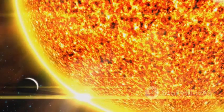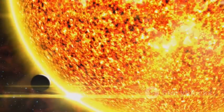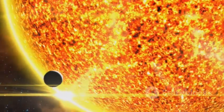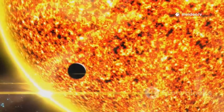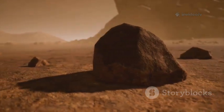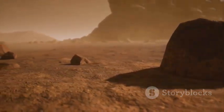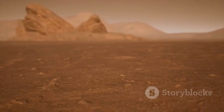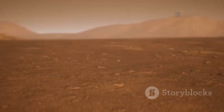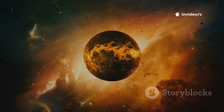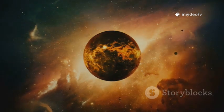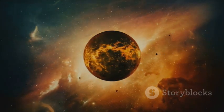Proxima b's close orbit, once its greatest hope, is also its downfall. The proximity exposes it to the worst the star has to offer, making survival nearly impossible. The truth: Proxima b is likely a barren, airless, radiation-blasted world. Its surface is a testament to the harsh realities of space, not the second Earth we hoped for. The search for a true twin to our planet continues, and with it, our hope for finding life elsewhere.